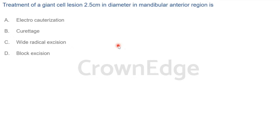In curettage you secure the entire bony margin. Wide radical excision is done when the lesion is bigger or when there are chances of recurrence or carcinomatous change. Giant cell lesions are generally benign and the borders are easier to find. The most important part of surgery is to define clear borders. For a 2.5 cm giant cell lesion, curettage is sufficient.